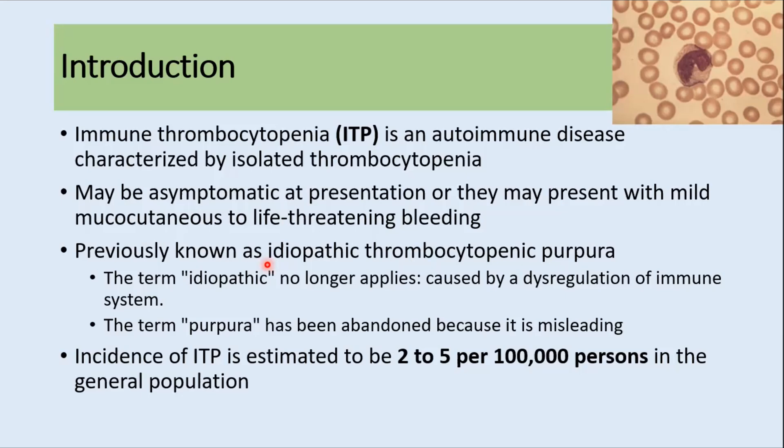The incidence of ITP is estimated to be around 2 to 5 cases per 100,000 persons in the general population.